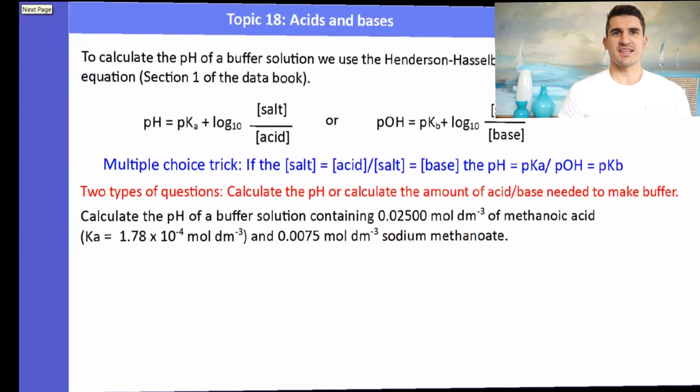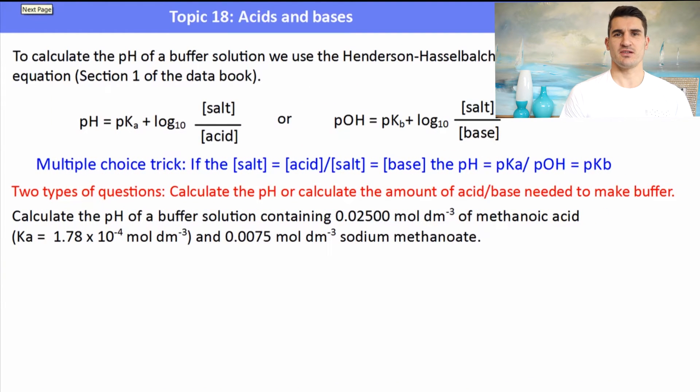If we're asked to calculate the pH of a buffer solution we use the Henderson-Hasselbalch equation which is in section one of the data book and we need to work out either the pH or the pOH and work out if they're asking us about a base or an acid buffer. A little trick is if the concentration of acid and salt or the base and the salt is equal, then we can simply say that the log 10 of one is zero so the pH equals the pKa.